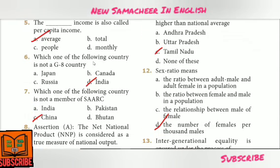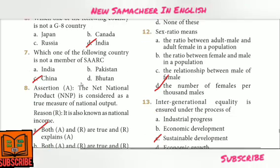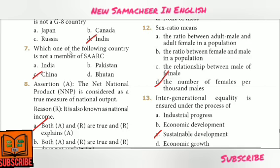Sixth question: Which one of the following countries is not a G8 country? — Answer Option D: India. Seventh question: Which one of the following countries is not a member of SARC? — Answer Option C: China.